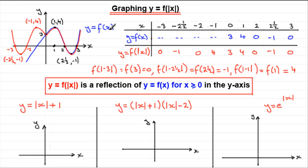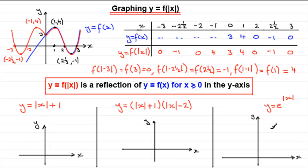That's for this particular y equals f of x function. What I want you to do is have a go at these examples. Try to sketch y equals mod of x plus 1; then y equals mod x plus 1 multiplied by mod x minus 2; and lastly, y equals e to the power mod x. Think about what each graph would look like without the mod sign around the x, then take the right-hand side of the y-axis and reflect that part in the y-axis to get the full graph. Pause the video and have a go, then come back and I'll run through the solutions.